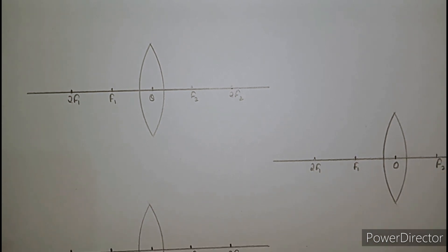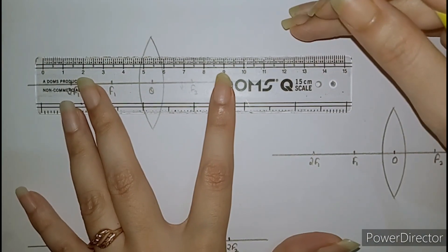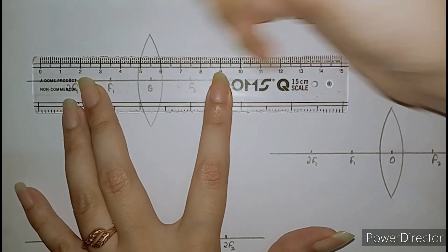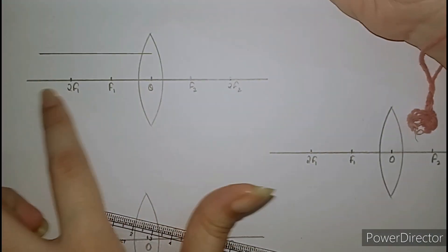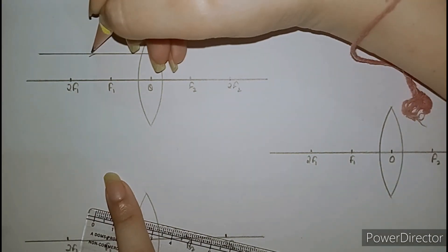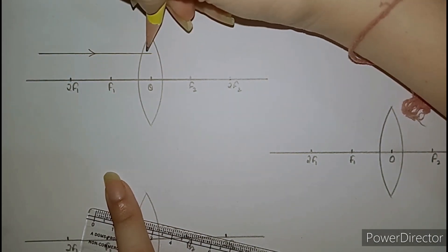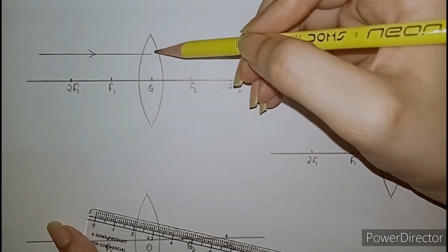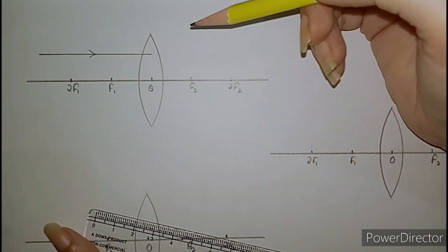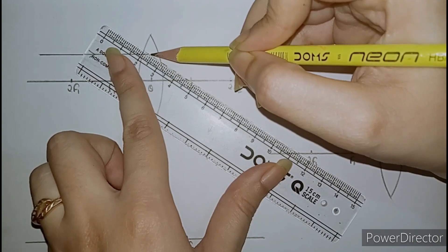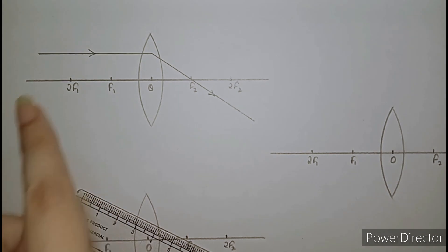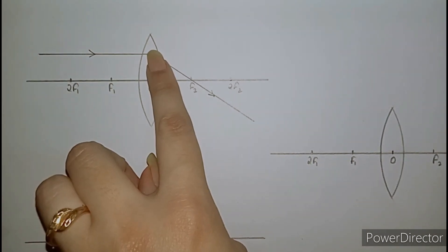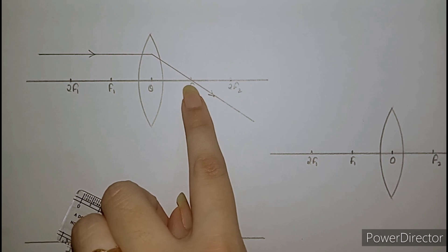The very first rule, which we already discussed in the case of mirrors, is the same: if a ray of light is coming parallel to the principal axis and striking the convex lens, it will bend and pass from the focus. So this is Rule 1 — a ray of light passing parallel to the principal axis will pass through focus F2.